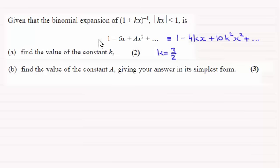We found out that the binomial expansion for this in part A was 1 minus 4kx plus 10k squared x squared. And the value of k was 3 over 2, or 1 and a half.